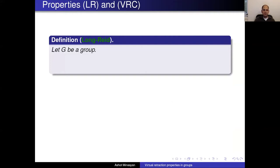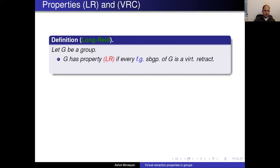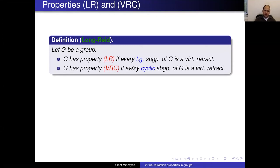You can study groups where all finitely generated subgroups are virtual retracts. This is a definition given by Long and Reid: a group has property LR — standing for local retractions — if every finitely generated subgroup of G is a virtual retract. A second property I'll discuss is VRC, virtual retraction onto cyclic subgroups: every cyclic subgroup is a virtual retract.